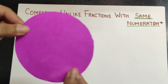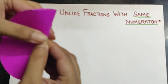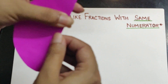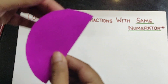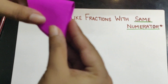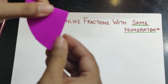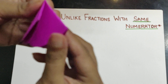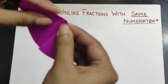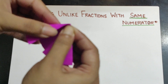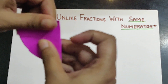We just have to take a circular cutout for this. We will fold it like this so that we get two equal parts from this circle. We again fold it like this, which helps us to get four equal parts. And now when we open them and fold it like this, we get eight equal parts of the circle.